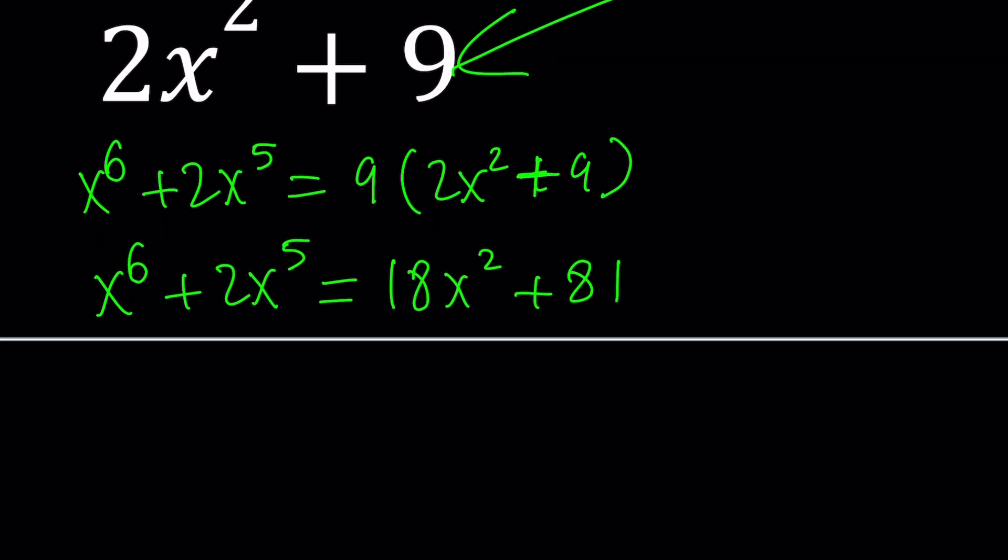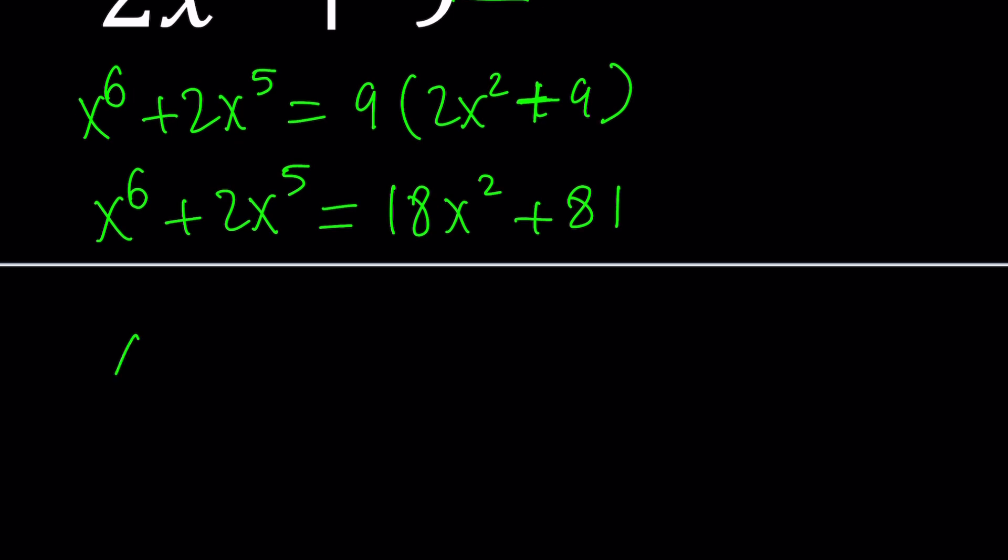So, first step is to add something to both sides so that we can make the left-hand side a perfect square. Can you guess what it is? Okay. Let me tell you. We have x to the 6th plus 2x to the 5th. If you add x to the 4th, you get a perfect square. And do you want to know why?